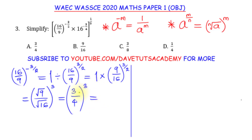3 raised to power 3: 3 times 3 is 9, times 3 is 27. 4 raised to power 3: 4 times 4 is 16, times 4 is 64. So for this first expression, I have 27 over 64. But that's not all — I also need to work on 16 raised to power minus 3 over 4.